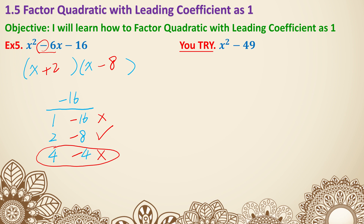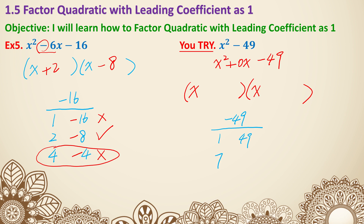That leads us to example 6. We don't even have a middle term here, but don't forget — that just means we have a 0x. So rewrite this as x squared plus 0x minus 49, which is still a quadratic. Start each parenthesis with x, and find two numbers that multiply to get negative 49. Options: 1 and 49, or 7 and 7. Since the middle adds to 0, we need a pair that's the same but with opposite signs. So it's x plus 7 times x minus 7, because positive 7x and negative 7x cancel out to give 0x in the middle.